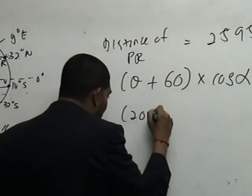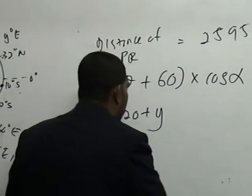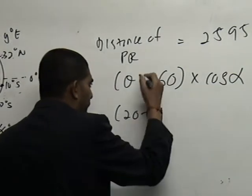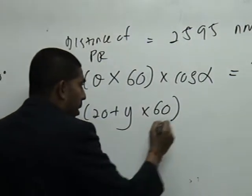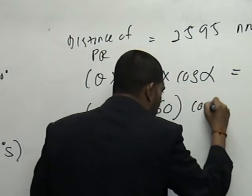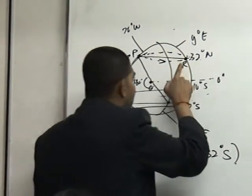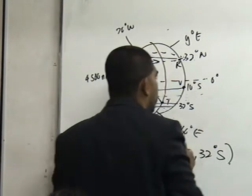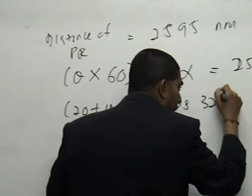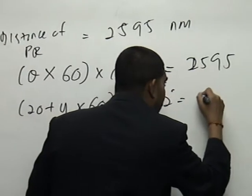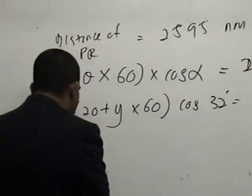So, 20 plus with Y. Oh, okay, please, students. My mistake. This is not plus. This is what? Times. Thank you. Times. Multiply by 60. Times by cos of alpha. What is alpha I mentioned just now? The angle of the latitude. What is the angle of this latitude, students? 32 degrees. Wonderful. So, 32 degrees. And what is the answer? The distance. 2, 5, 9, 5. Can you see that, students?